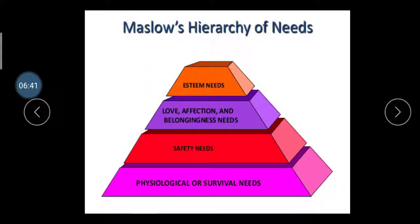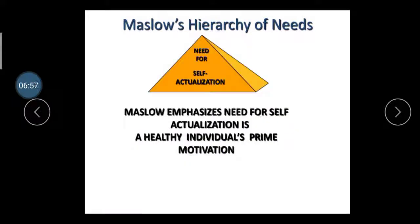The fourth need is the esteem need. Esteem need means that in whichever sector you work, you become a person who develops new creative ideas. This is called the esteem need. The last need is the need for self-actualization, which Maslow emphasized as the healthy individual's prime motivation. After physiological or psychological survival need, then security need, then love, affection and belongingness, then esteem need — the last one is the self-actualization need.